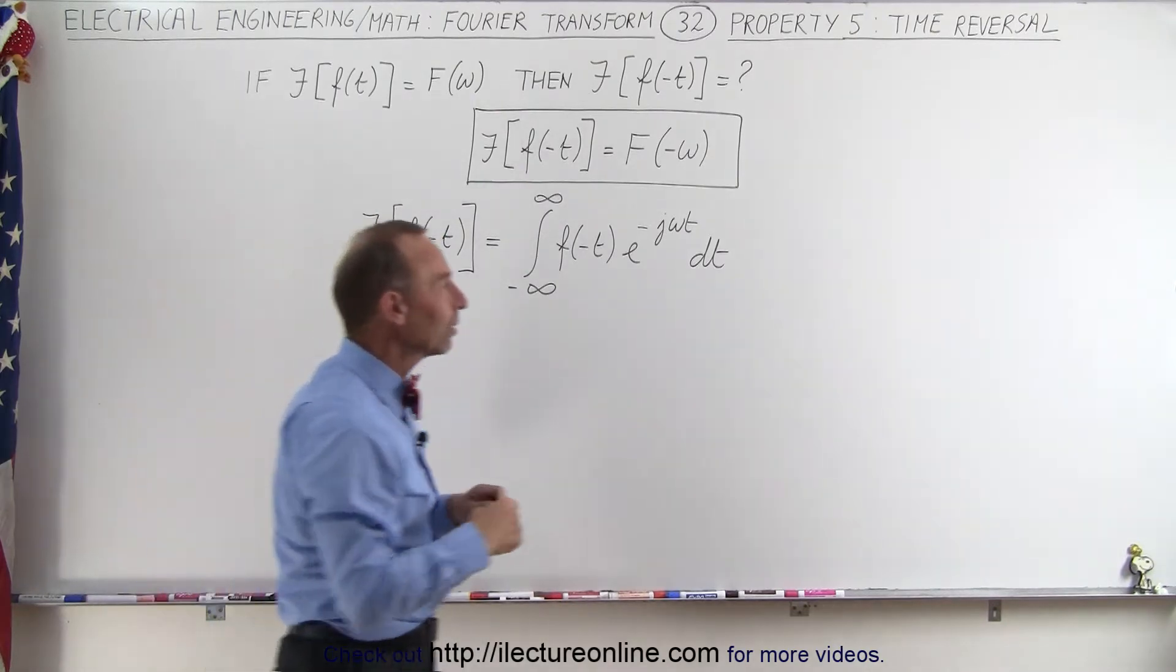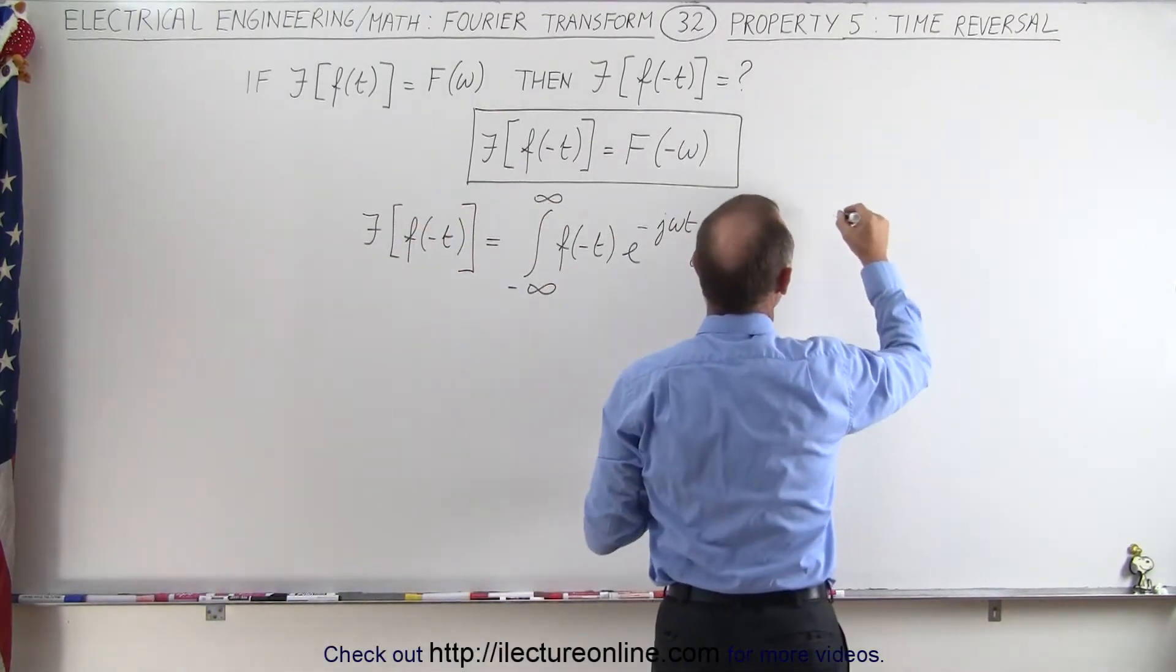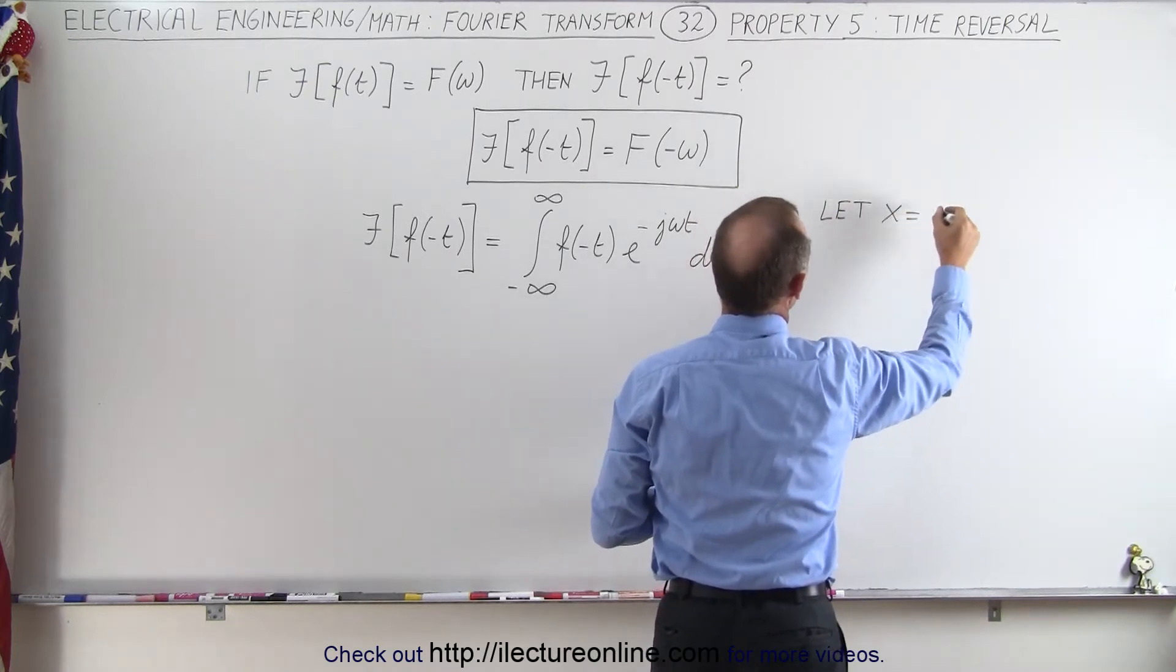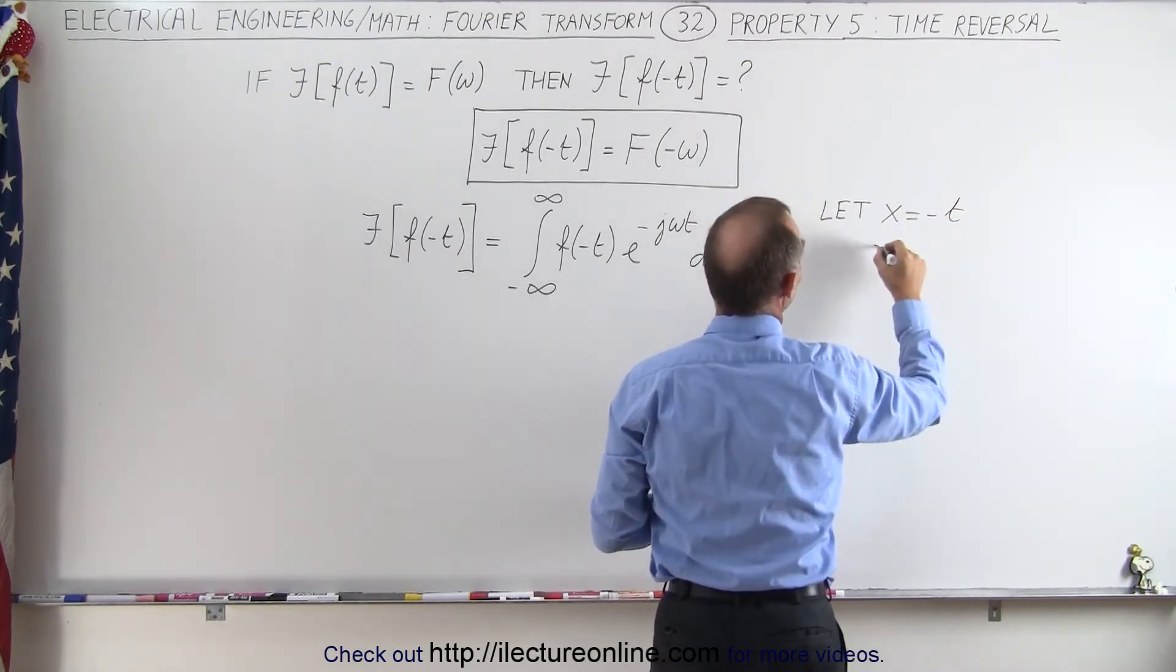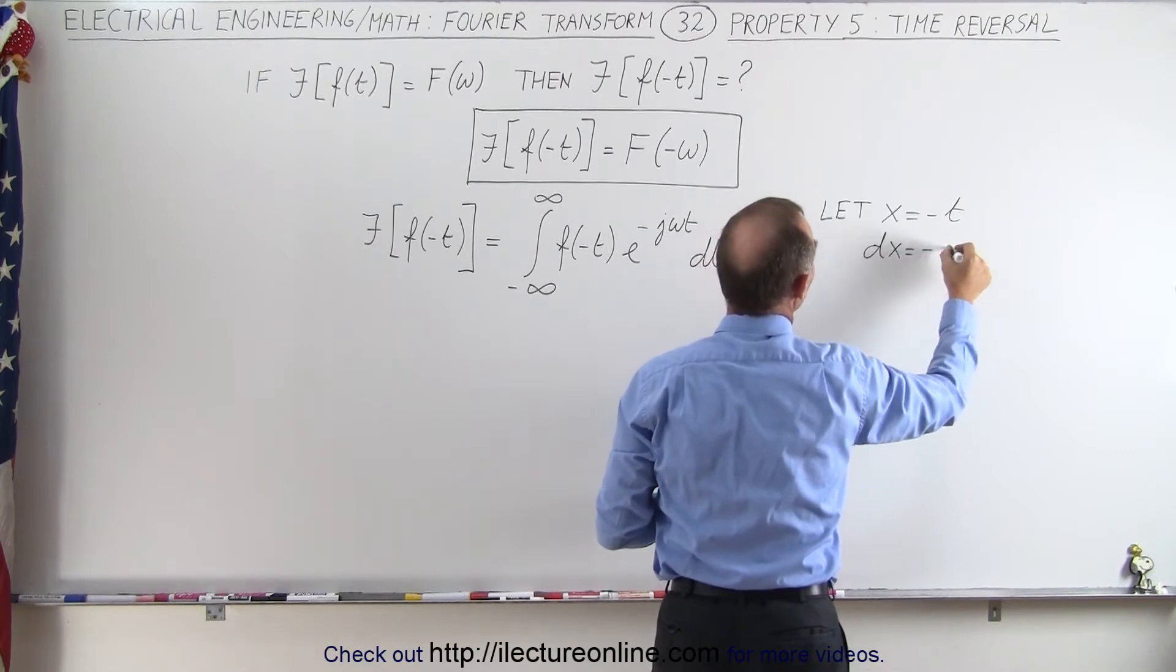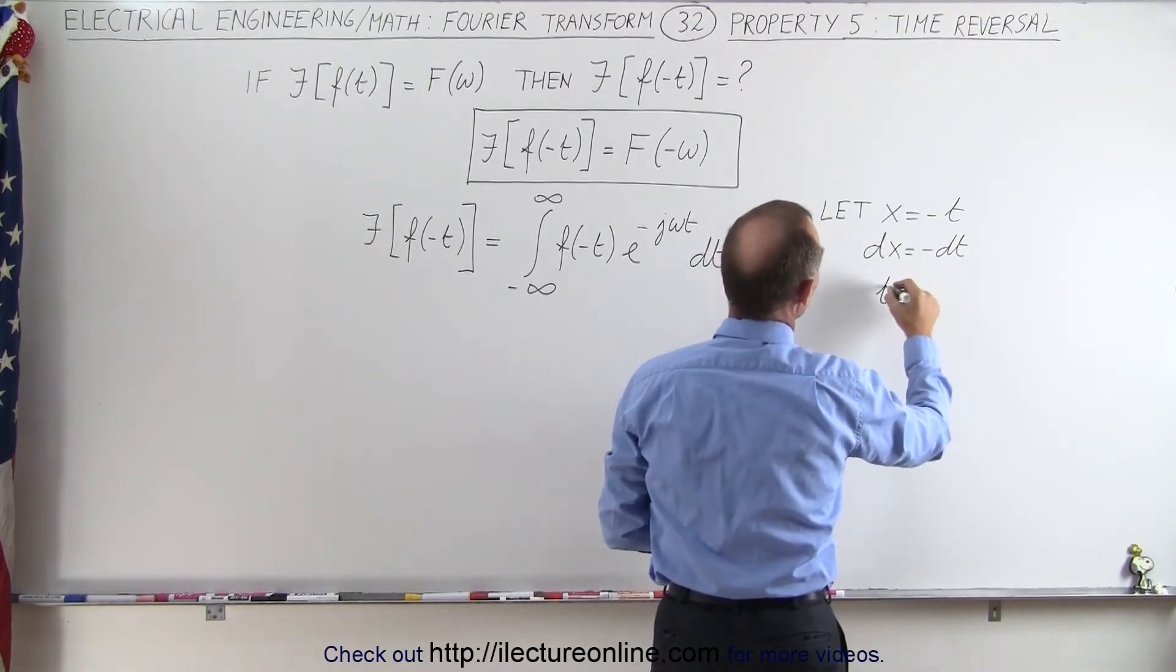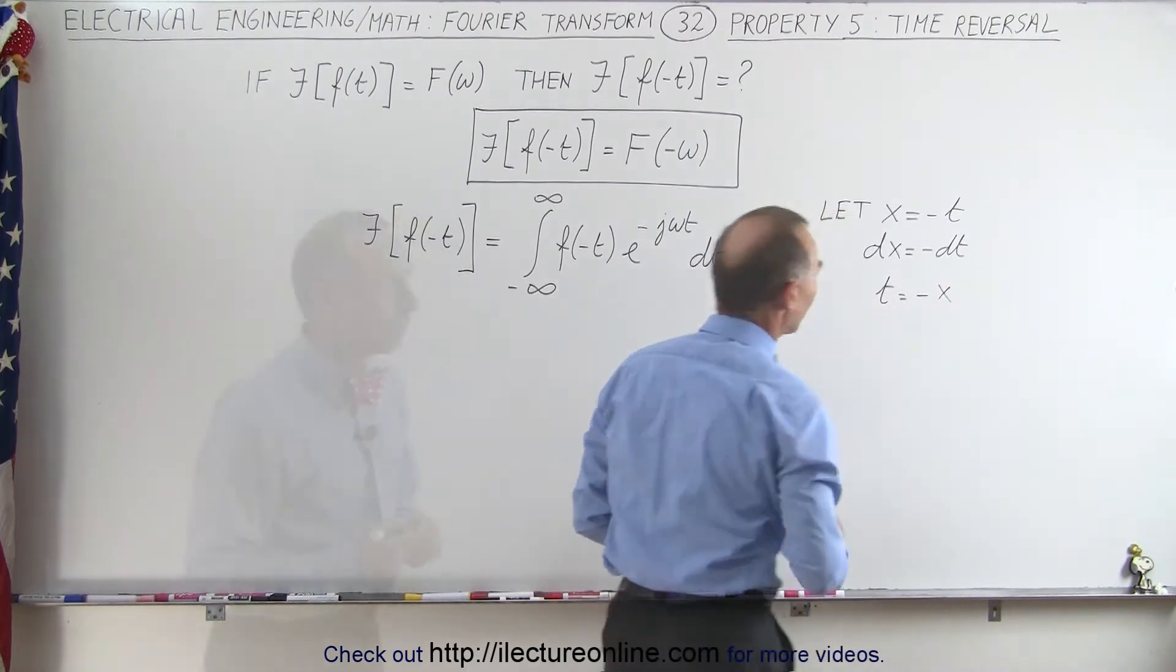Now what we're going to do here is we're going to make a substitution. We're going to let x equal negative t. That means that dx will be equal to negative dt and let's see here, well then t will be equal to minus x. I think that's all we're going to need.